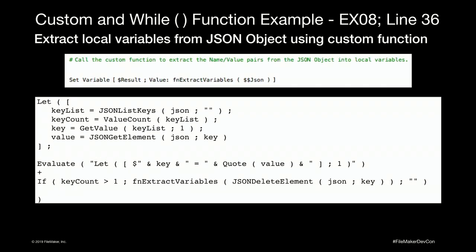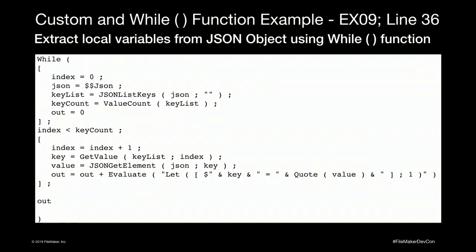The second example is a function I built myself for passing multiple values into subscripts using JSON name-value pairs. Using Let and Evaluate, I can declare those variables dynamically in a subscript whether I have one, two, or ten — a single script step declares all of them. The While equivalent looks very similar; it's just a matter of making sure I loop through the correct number of name-value pairs and then get my result.